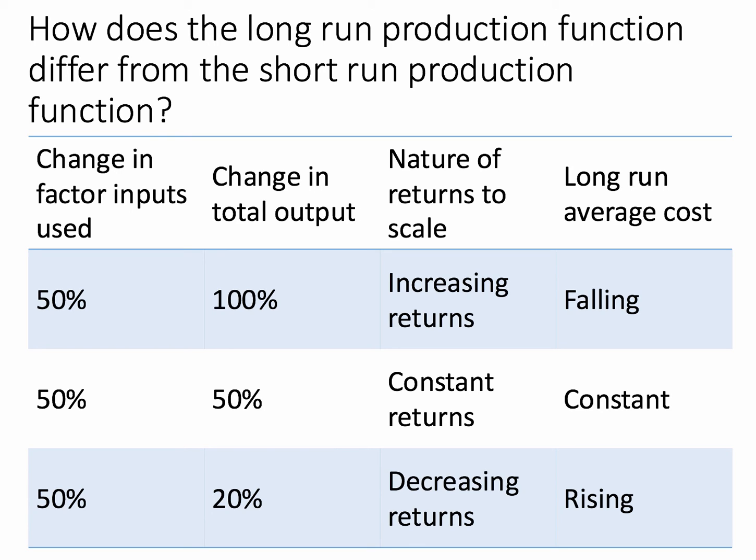If output rises in proportion to input, that's constant returns to scale and average cost stays the same. And if output doesn't rise quite as fast as factor inputs — say a 50% rise in inputs causes only a 20% change in output — we have decreasing returns to scale, meaning average cost is rising. That relates to diseconomies of scale.